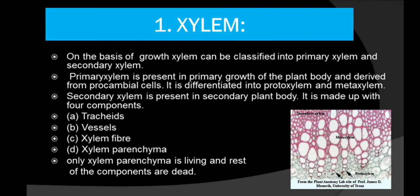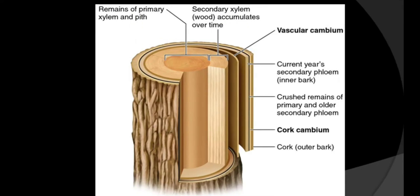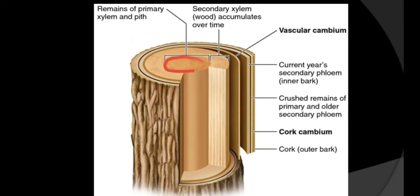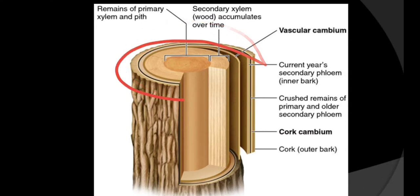On the basis of growth, xylem can be classified into primary xylem and secondary xylem. Primary xylem is present in the primary growth and comes earlier in the plant. Later, due to secondary growth, secondary xylem is formed. In the diagram, you can see the remains of the primary xylem in the pith region. The secondary xylem accumulates later in the life of the plant and is also known as wood. The outer protective layer is known as the periderm.